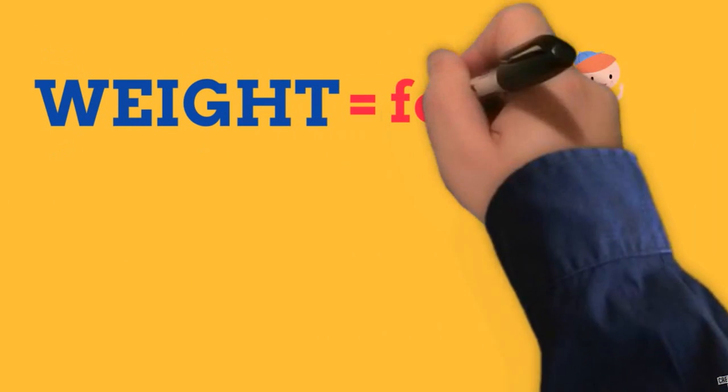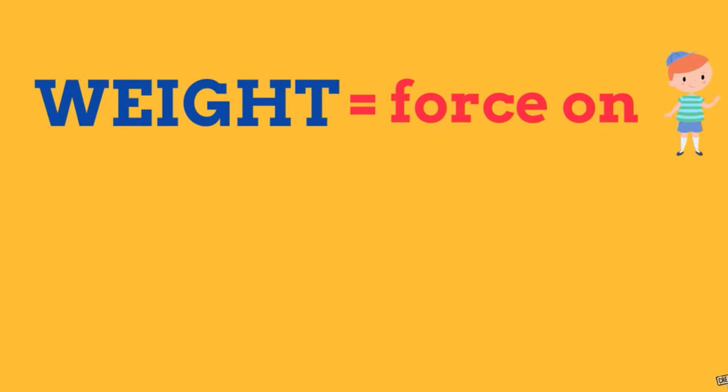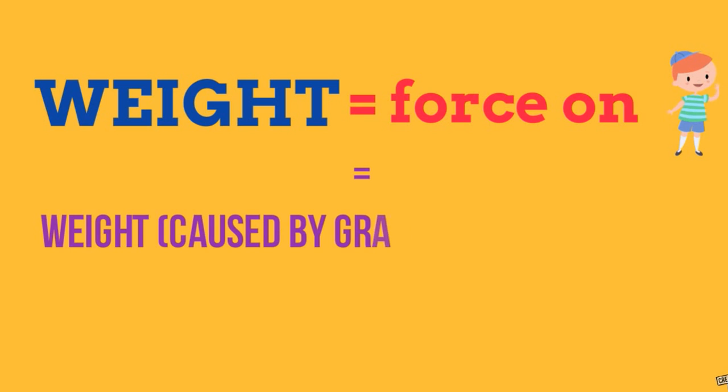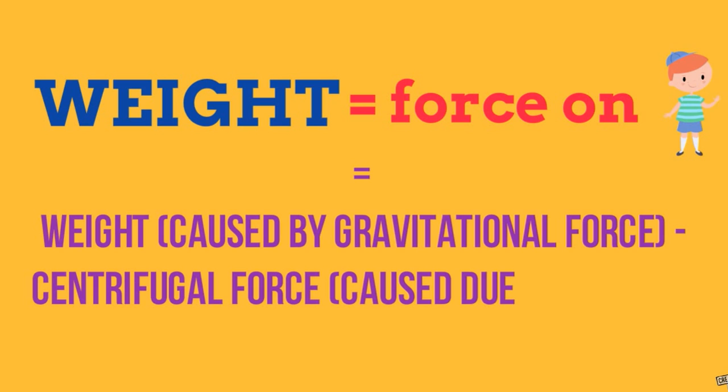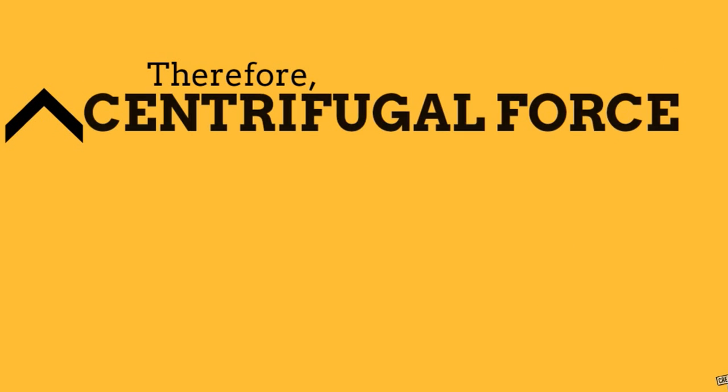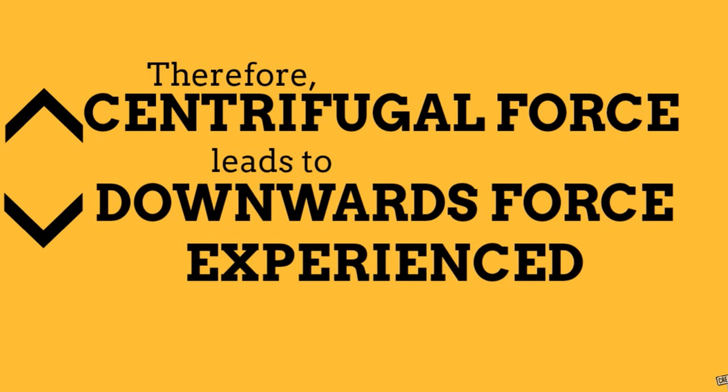We know that the downwards force on us is equal to the force caused by the gravitational field of the Earth minus the centrifugal force being applied on us. Therefore, an increase in centrifugal force leads to a decrease in the downwards force experienced.